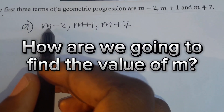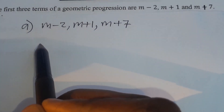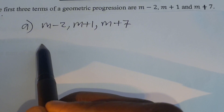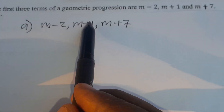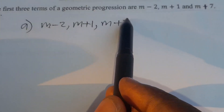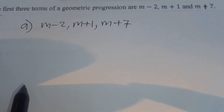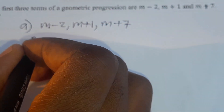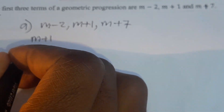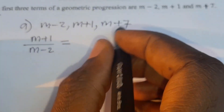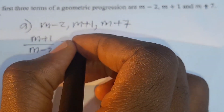The question says find the value of m. To find the value of m, we are going to use the formula for the common ratio of a geometric progression. We divide the next term by the previous term and equate it to the next term divided by the previous term.